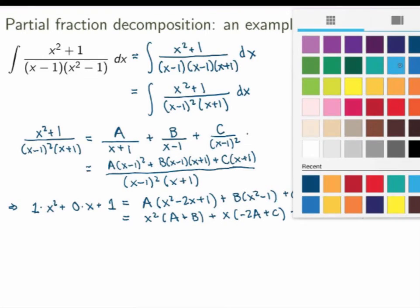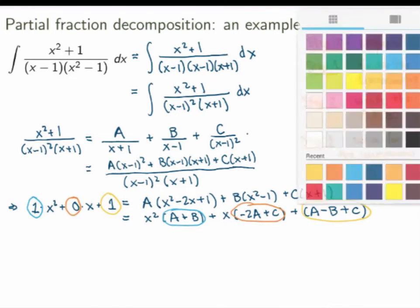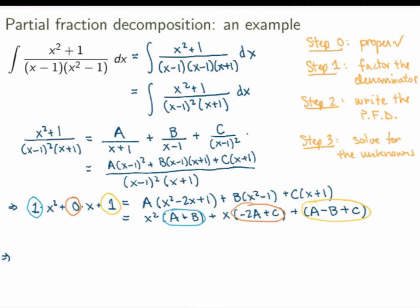I want the two sides to be equal, so each coefficient must match term by term. For x²: 1 equals A plus B. For x: 0 equals minus 2A plus C. For the constant: 1 equals A minus B plus C. So I end up with a system of three equations: A plus B equals 1, minus 2A plus C equals 0, and A minus B plus C equals 1.